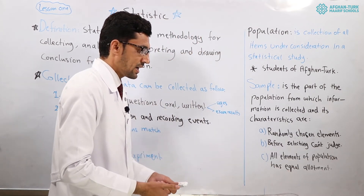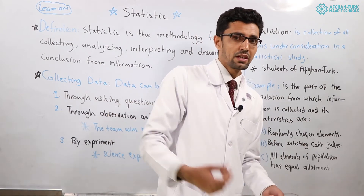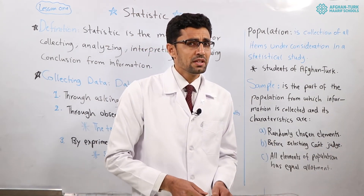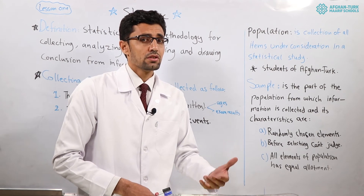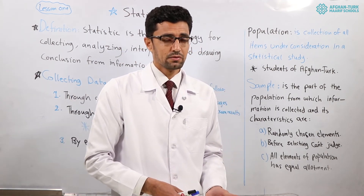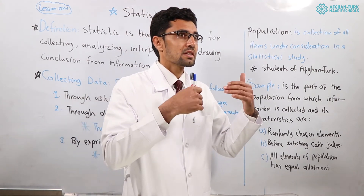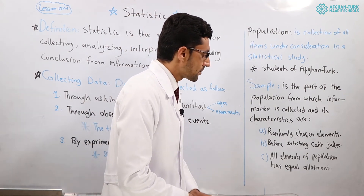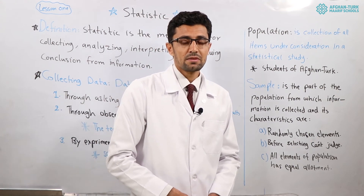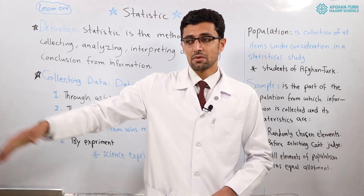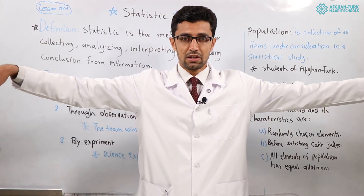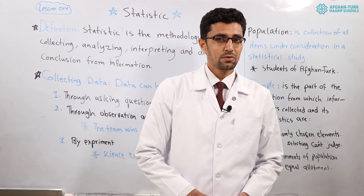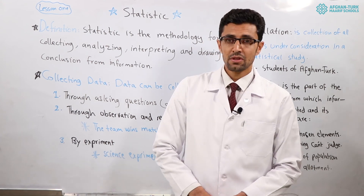For example, you enter a class and randomly you choose three persons. Before selecting, you can't judge. You want to know how many students passed, so before that, you shouldn't be aware — you shouldn't have any judgment. And the last characteristic: all elements of the population have equal allotment. Do not favor your brother or father. All ones who are in the class should have equal allotment. These were the most important concepts of statistics.